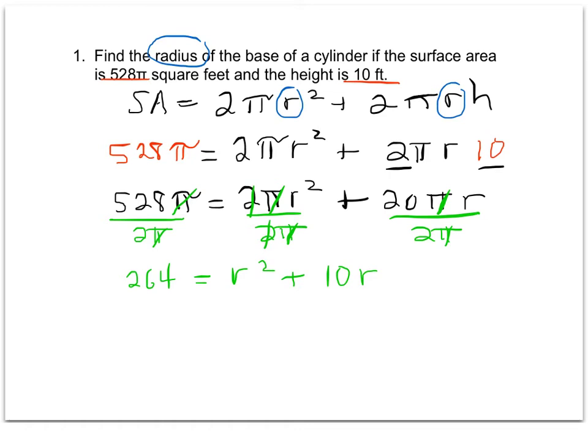To put it in standard form, I just have to move that 264 over, set everything equal to 0, and I'm going to have r² + 10r - 264 = 0.